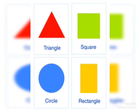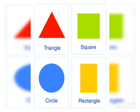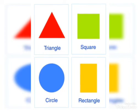Triangle, square, circle, rectangle. Once again I will repeat: triangle, square, circle and rectangle. Is it clear boys?